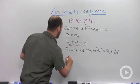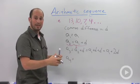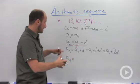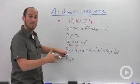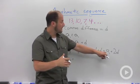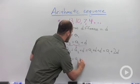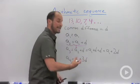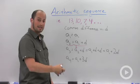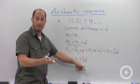Continuing on, a sub 4 is basically going to add another d to a sub 3. We're just adding a d every time in order to make it to the next term. So we just add a d to this previous term and we end up with a sub 1 plus 3d. This is going to continue on and on. To get a sub 5, we add in another d, and so on and so forth.